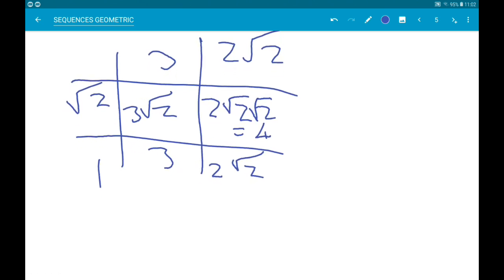So, together, we have 3 add 4, which is 7. And then we have 3 root 2 add 2 root 2. That is 5 root 2.